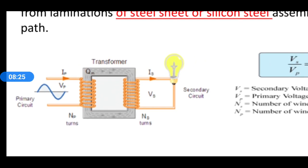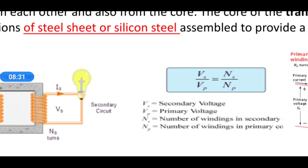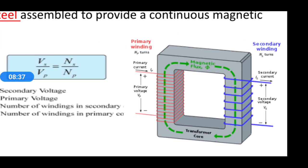In the secondary coil, current starts to flow. This is the basic principle based on the mutual induction concept. Looking at the diagram, we see the laminated core, primary winding on the left side, and secondary winding on the right side. The primary voltage is VP and primary current is IP. Similarly, the secondary current is IS and secondary voltage is VS.